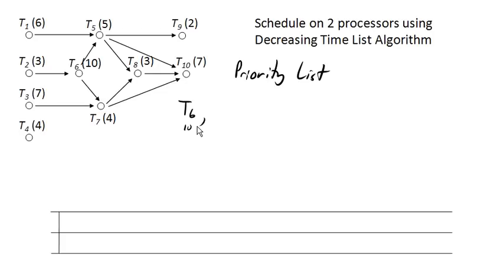Our next longest tasks are task 10 and task 3, both of which have a time of 7. Just out of convention, we list the smaller task number first. So we'll do task 3 and task 10, both of which have a time of 7.